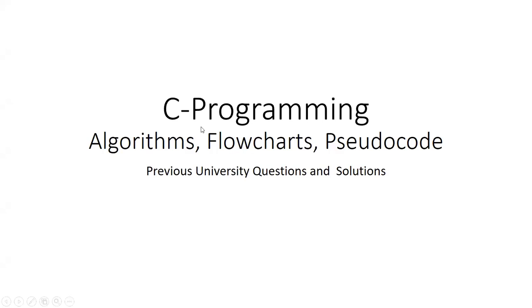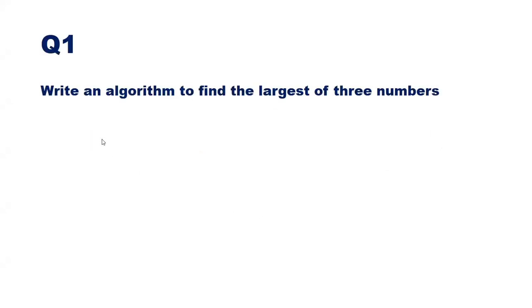In this video, let us discuss some important questions on algorithms and flowcharts — Zero Code Module One of C programming. First question: write an algorithm to find the largest of three numbers.